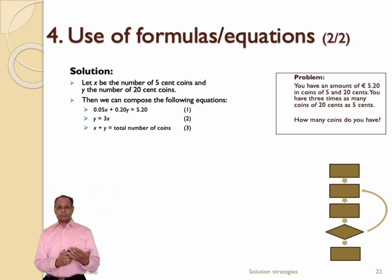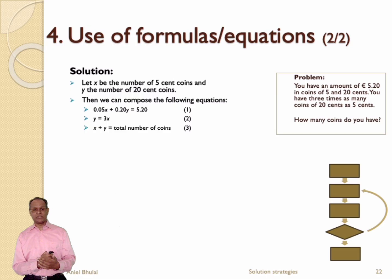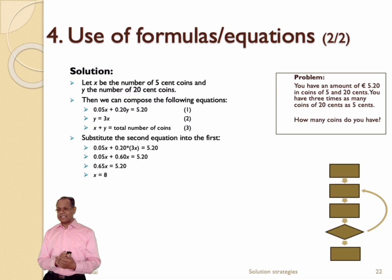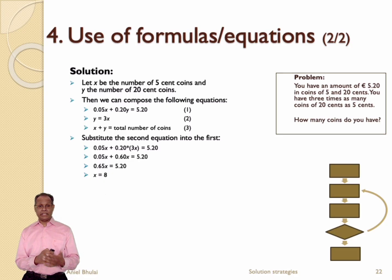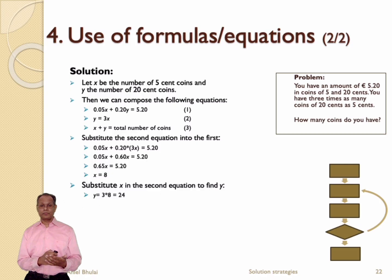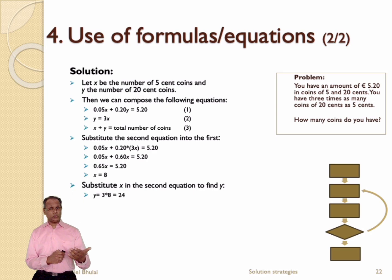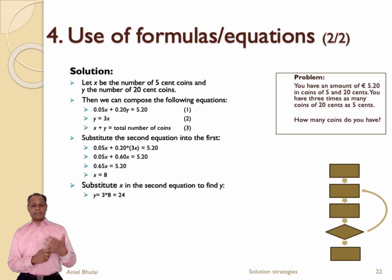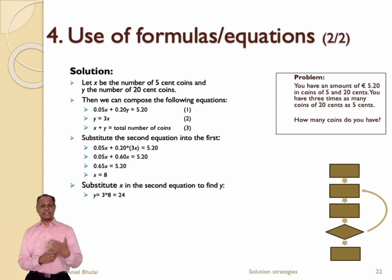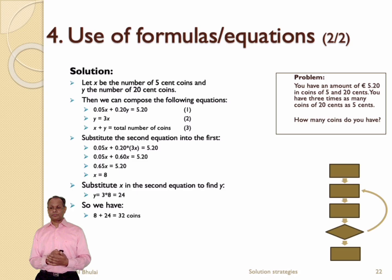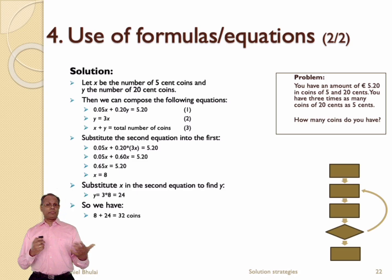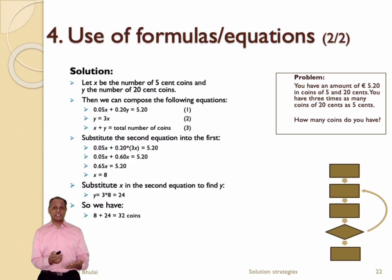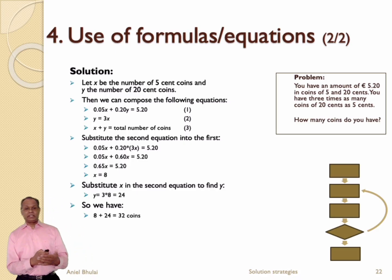Now that we have formalized the problem, we can easily solve it by solving the 3 equations. When we do this, we find that x is equal to 8. And by substituting into the equations, we find that y is equal to 24. This means that we have 8 coins of 5 cents and 24 coins of 20 cents, as x represented the number of 5 cent coins and y represented the number of 20 cent coins. With equation 3, we can calculate the total number of coins, which is 32. This is also the number of coins we found earlier with the guess and check solution strategy. The only difference is that solving the problem with equations is a bit faster and more efficient.